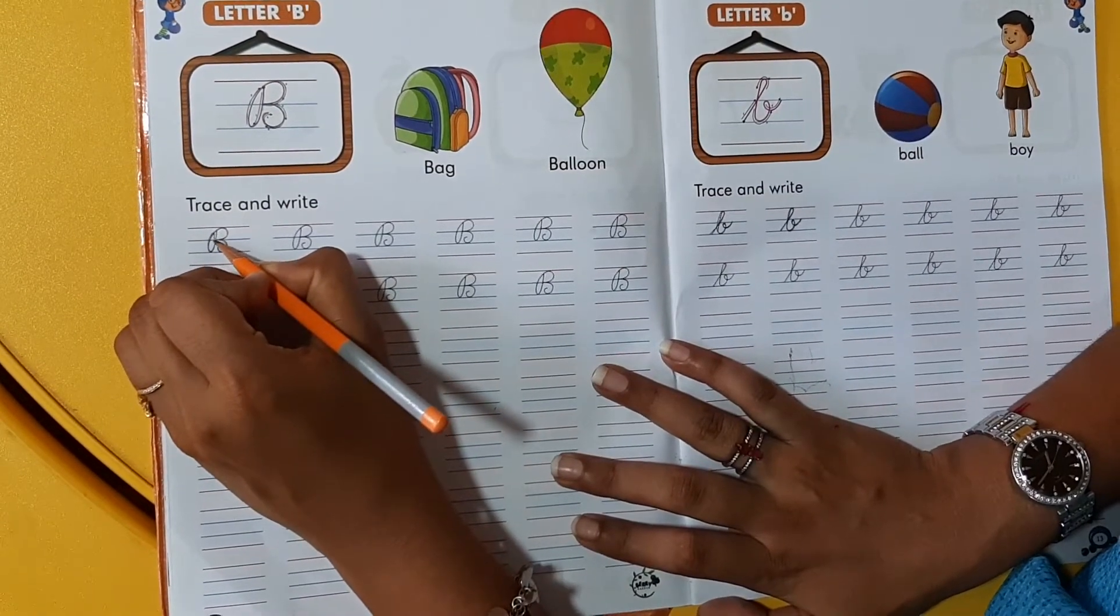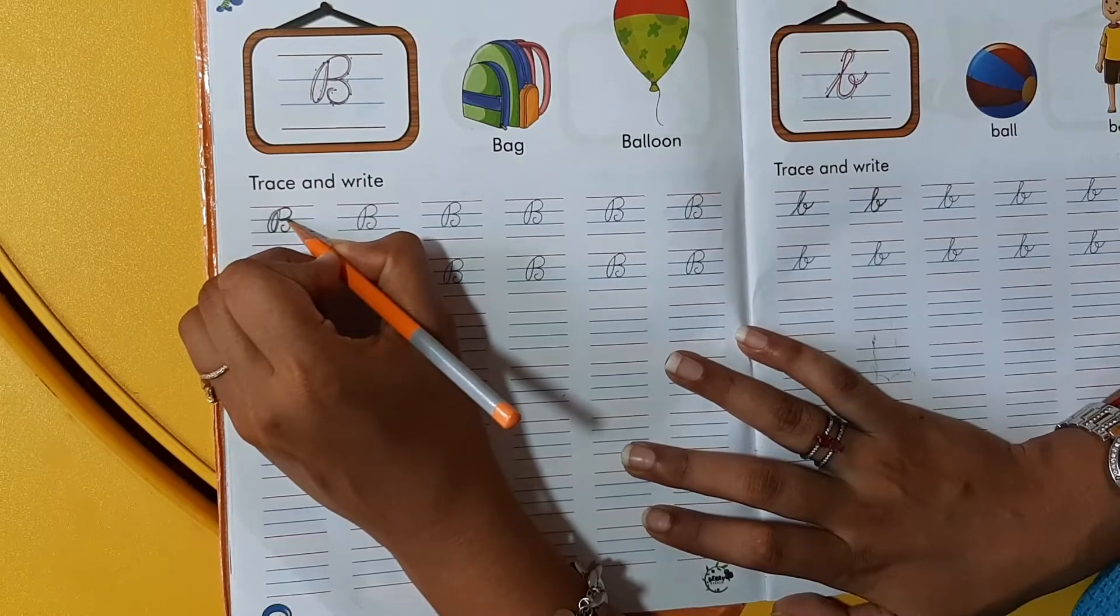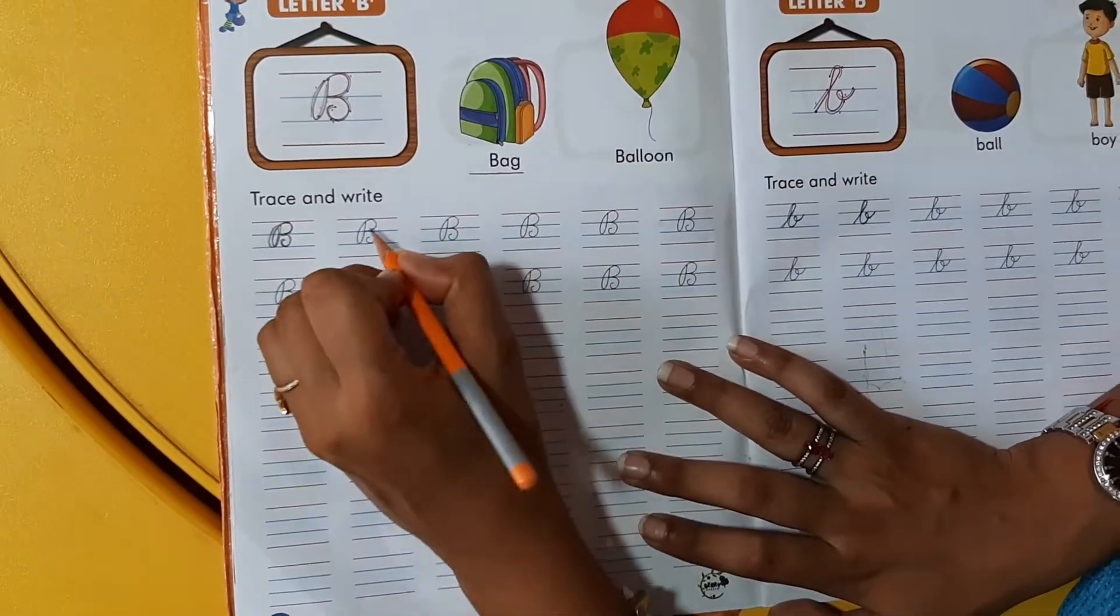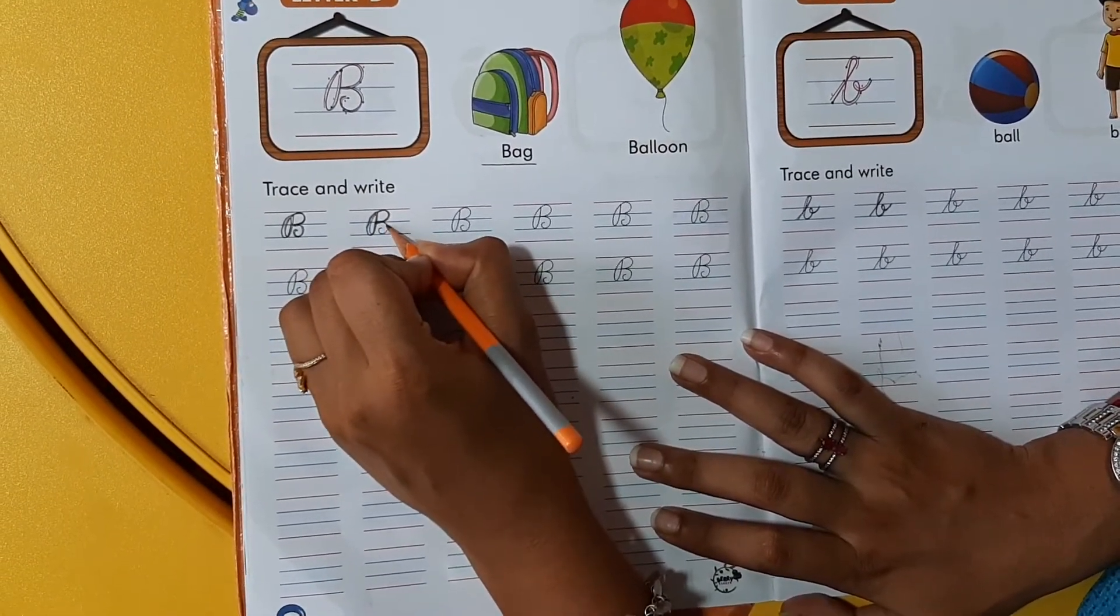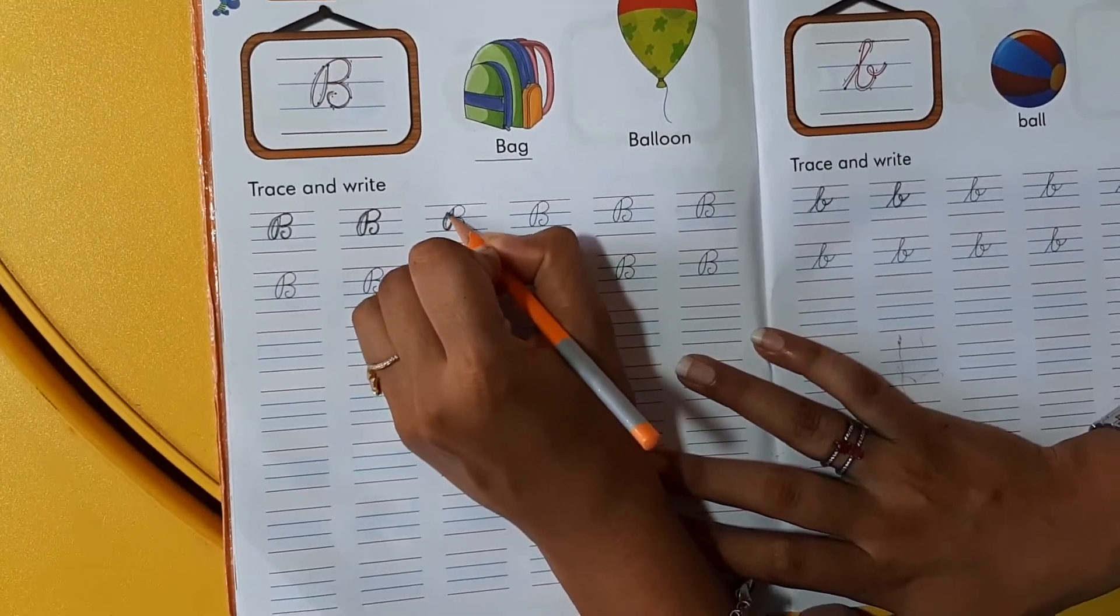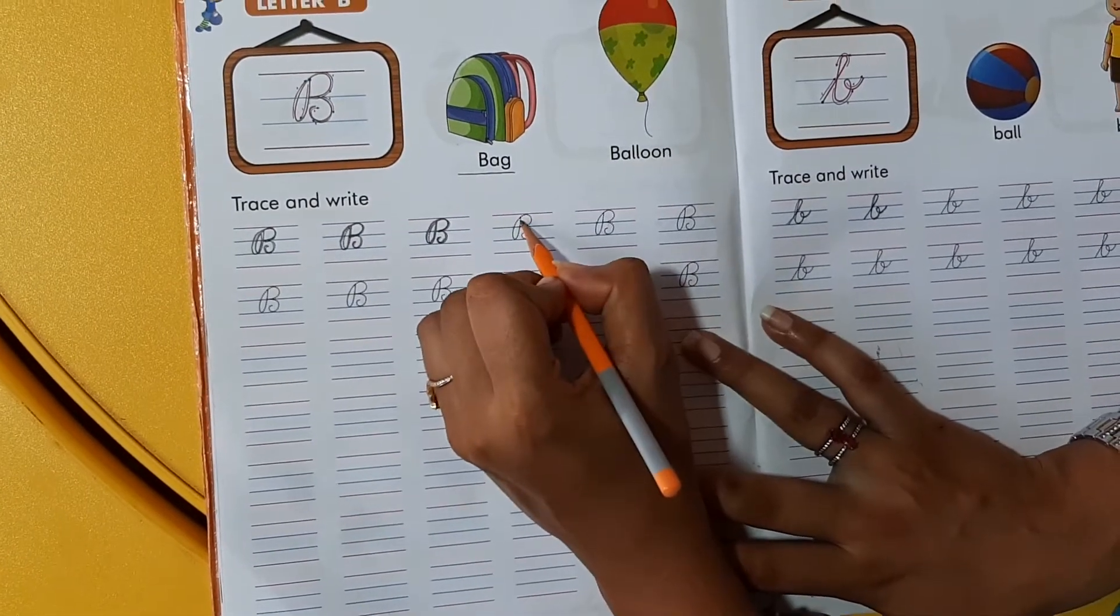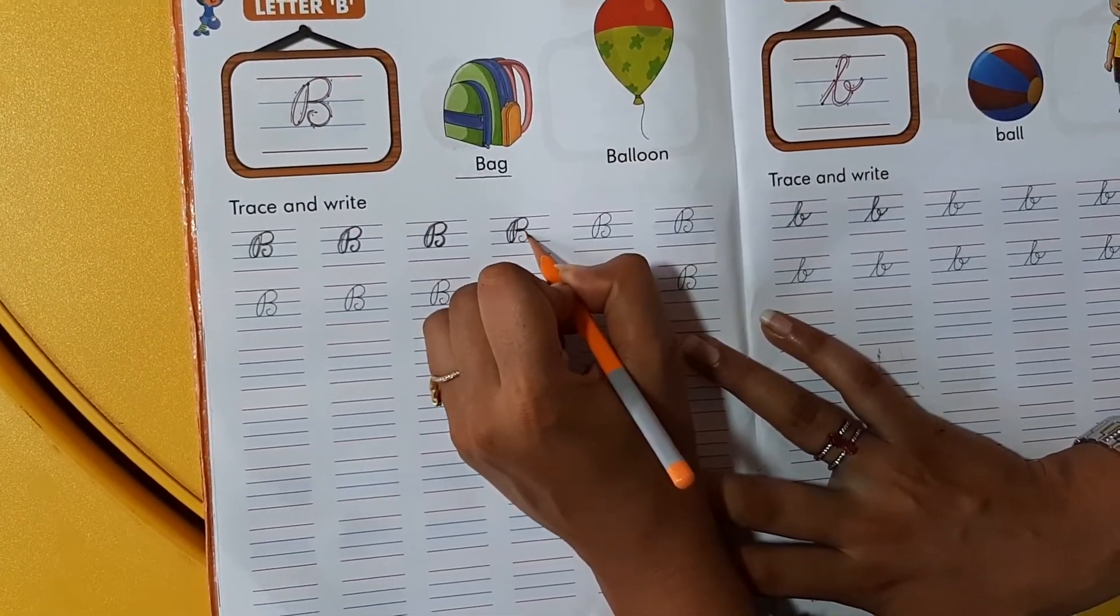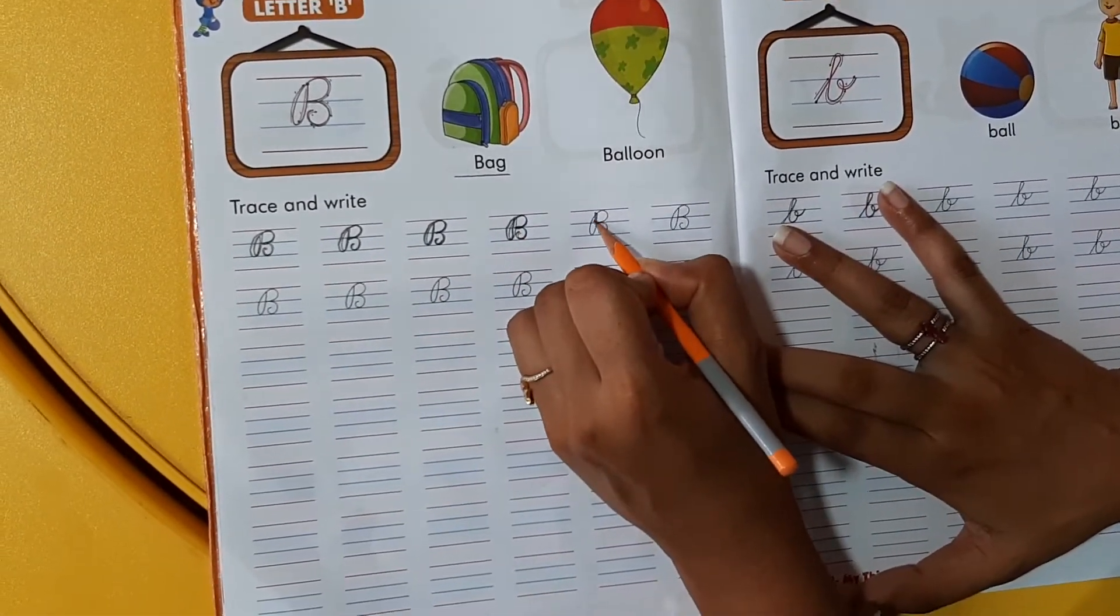Dekho. B for bag. Ye wala bag hai na? You are missing your bags. Yes. Why so? Because, ki school nahin a rhe ho is liye? Haan. Friend se nahin mil pa rhe hai hum log. Yes. Am bag mein apna yummy sartofin bhi laate hain. Woh bhe miss kar rahe hoon ga aap sab log.